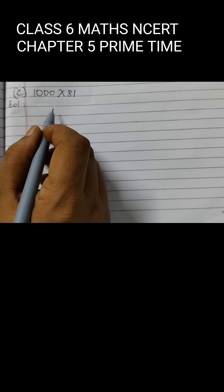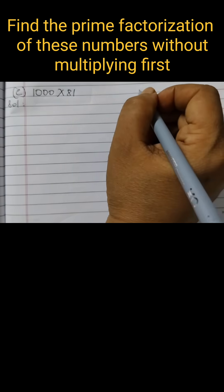Find the prime factorization of these numbers without multiplying first. 1000 × 81.